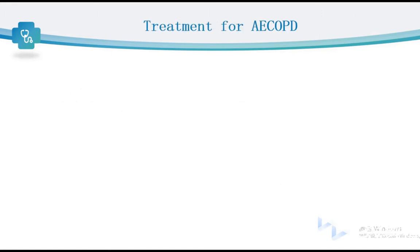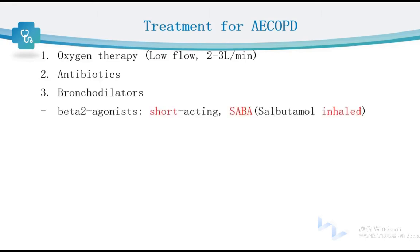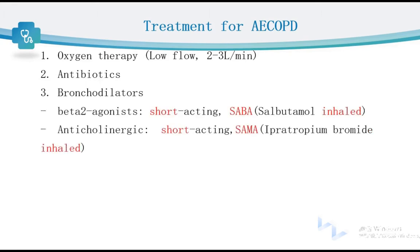Let's summarize the treatment for AECOPD patients. First, oxygen therapy: low-flow oxygen is required, usually 2 to 3 liters per minute. Second, antibiotics: antibiotics are required only when patients have concurrent respiratory infections. Third, bronchodilators: including beta-2 agonists, anticholinergics, and methylxanthines.